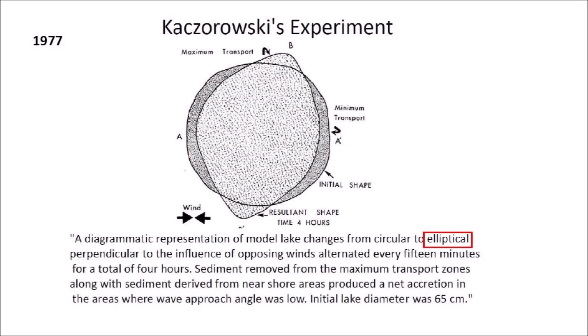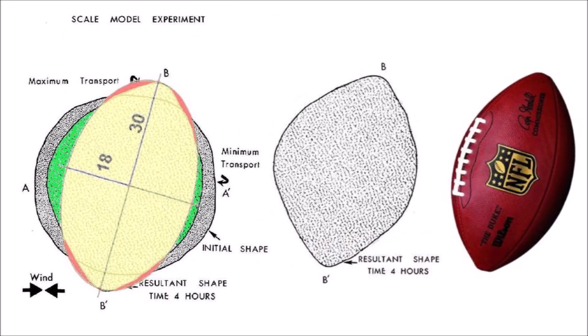Kaczorowski performed an experiment that he describes on pages 92 and 93 of his report. The caption of the image says: a diagrammatic representation of model lake changes from circular to elliptical, perpendicular to the influence of opposing winds alternating every 15 minutes, for a total of 4 hours. Sediment removed from the maximum transport zones along with sediment derived from near shore areas produced a net accretion in the areas where wave approach angle was low. Initial lake diameter was 65 centimeters. The claim by Kaczorowski that the model lake changes from circular to elliptical is false. The resultant shape of the model lake has pointy ends that resemble an American football more than an ellipse.